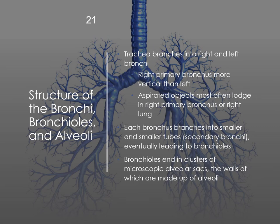The trachea branches into right and left bronchi — plural bronchi, singular bronchus — with the right bronchus being more vertical, making it more likely for foreign objects to go down that side. After the bifurcation at the carina, the bronchi branch into smaller and smaller tubes called secondary bronchi, eventually leading to the bronchioles. Attached to these bronchioles, like grapes on stems, are the alveoli.